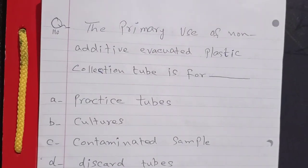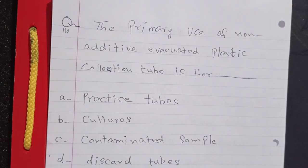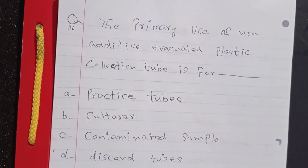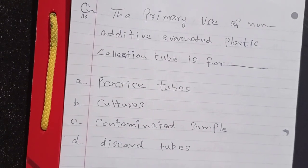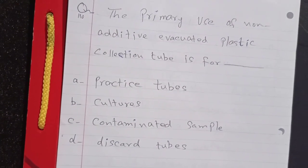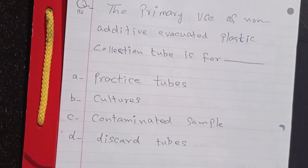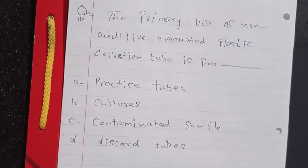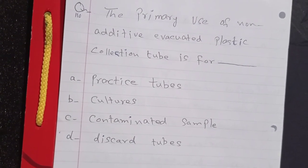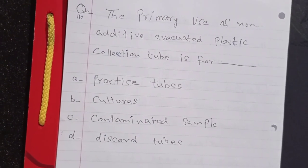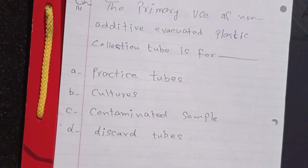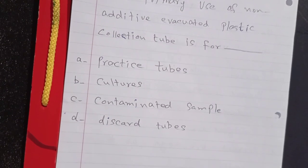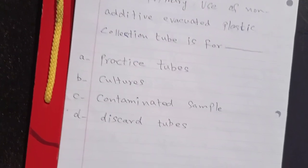The primary use of a non-additive evacuated plastic collection tube is for: practice tubes, cultures, contaminated samples, or discard tubes. The answer is D: discard tubes.